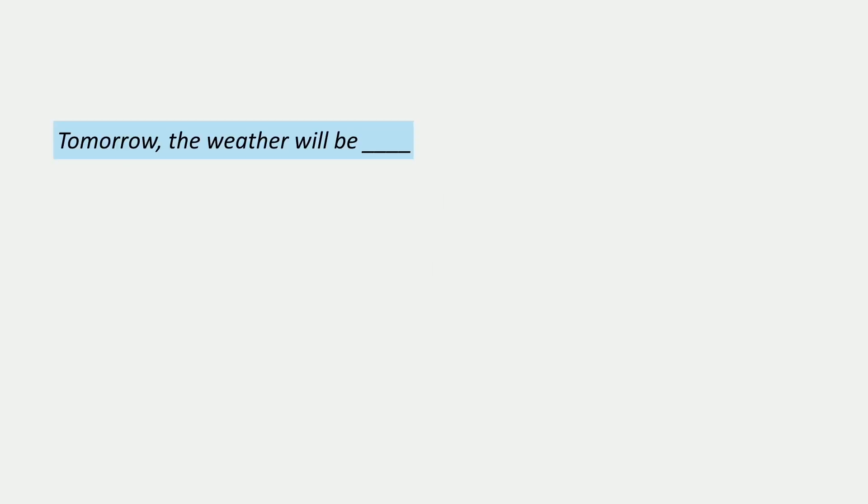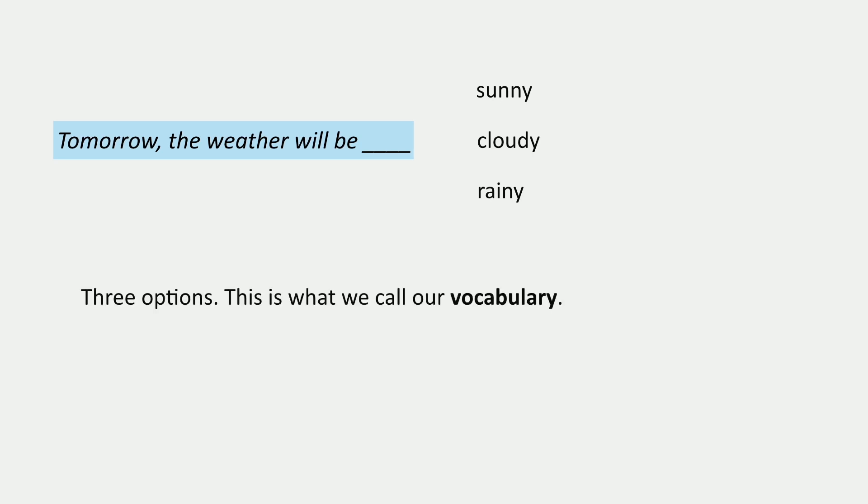I'm going to illustrate this with a slightly different example. Consider 'Tomorrow the weather will be blank,' and we're going to imagine a world where there are only three possible words that could come next: sunny, cloudy, and rainy. We're going to imagine these are the only three words we'll think about at all. This is going to define what we call our vocabulary for the model.